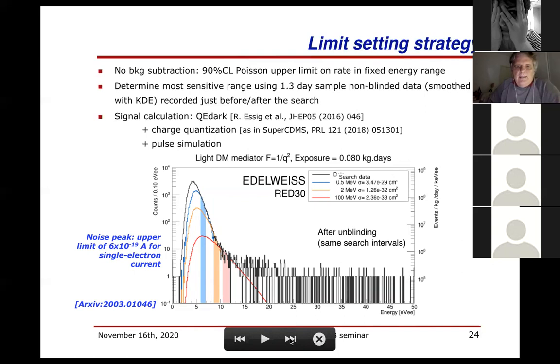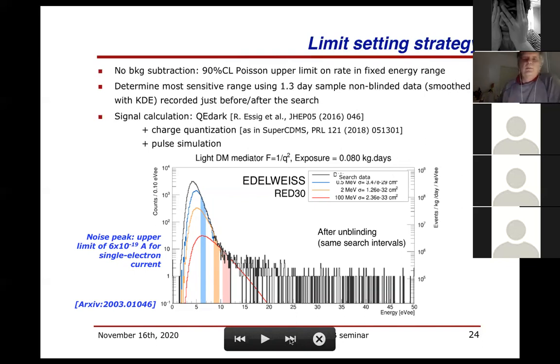In the pre-unblinding data, we wanted to get an idea of the sensitivity and put upper limits on signals and backgrounds. The limits are set simply: you take the non-blind data, use kernel smoothing, and select the range most constraining for different types of signals. In the different colors are dark matter signals with particles from 0.5 MeV to 100 MeV. You can see that signals all the way up to 100 MeV correspond to a few electrons — less than 20 eV of signal.